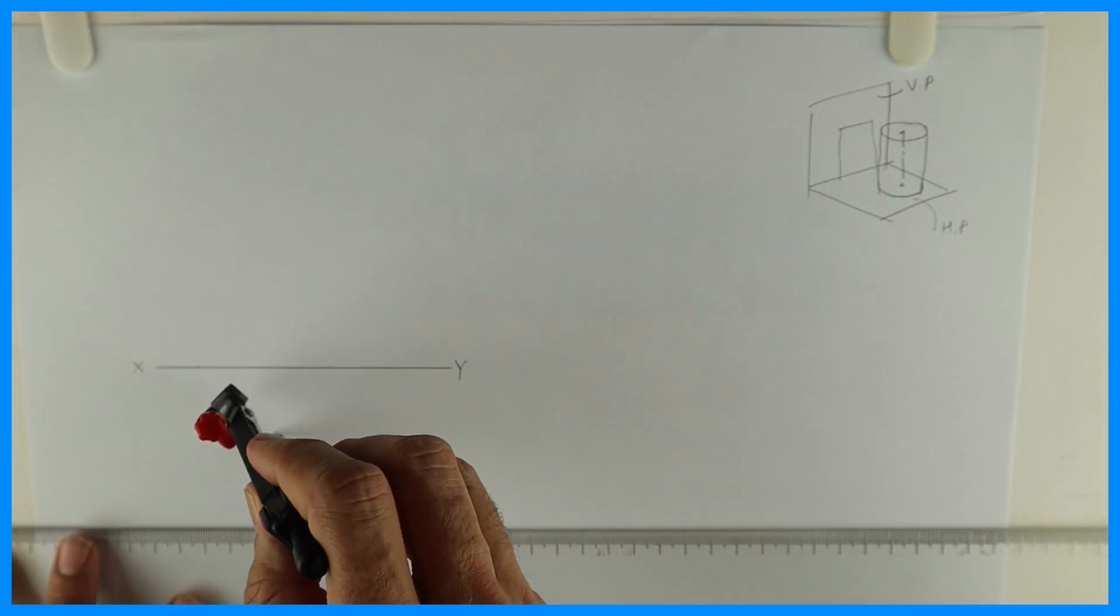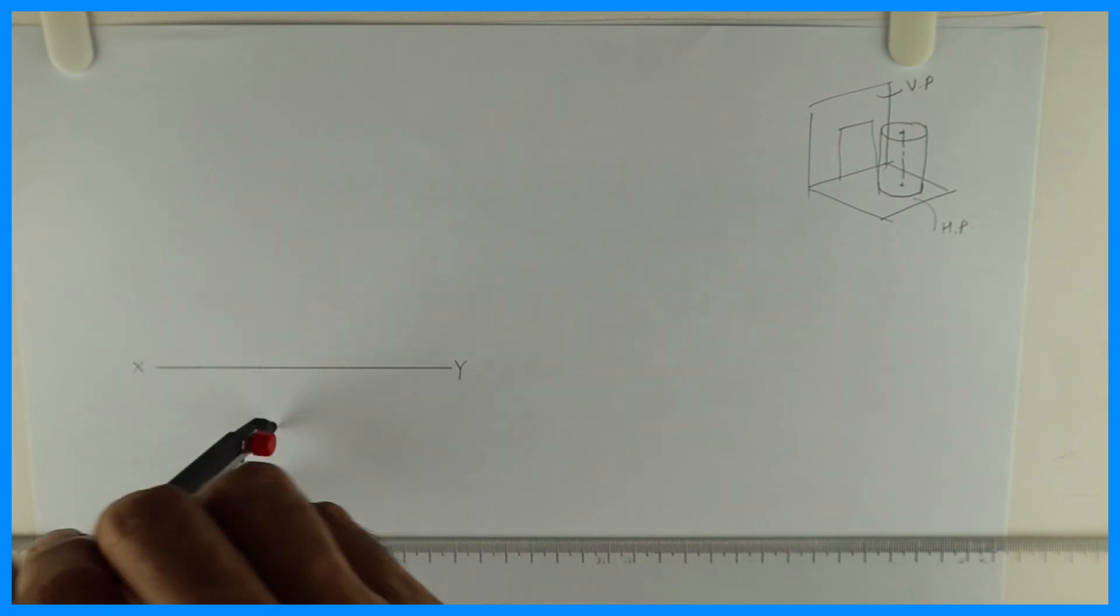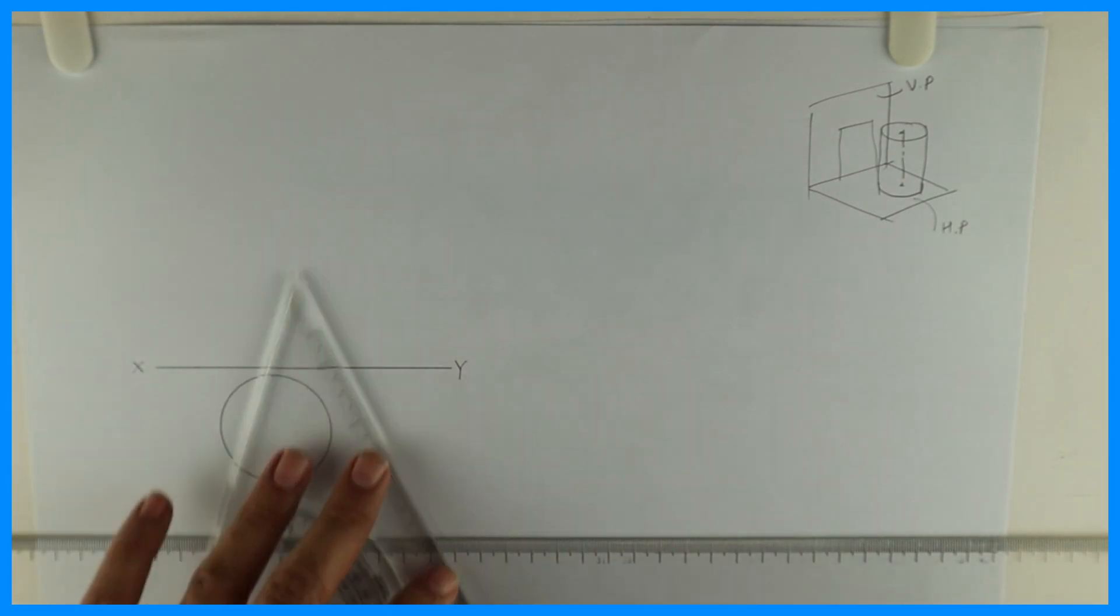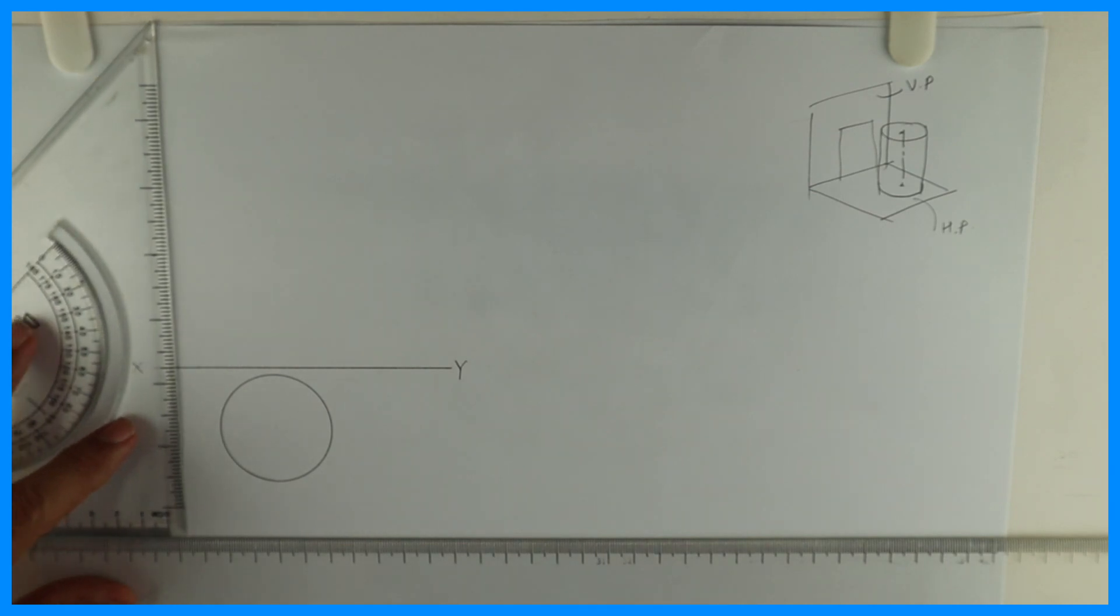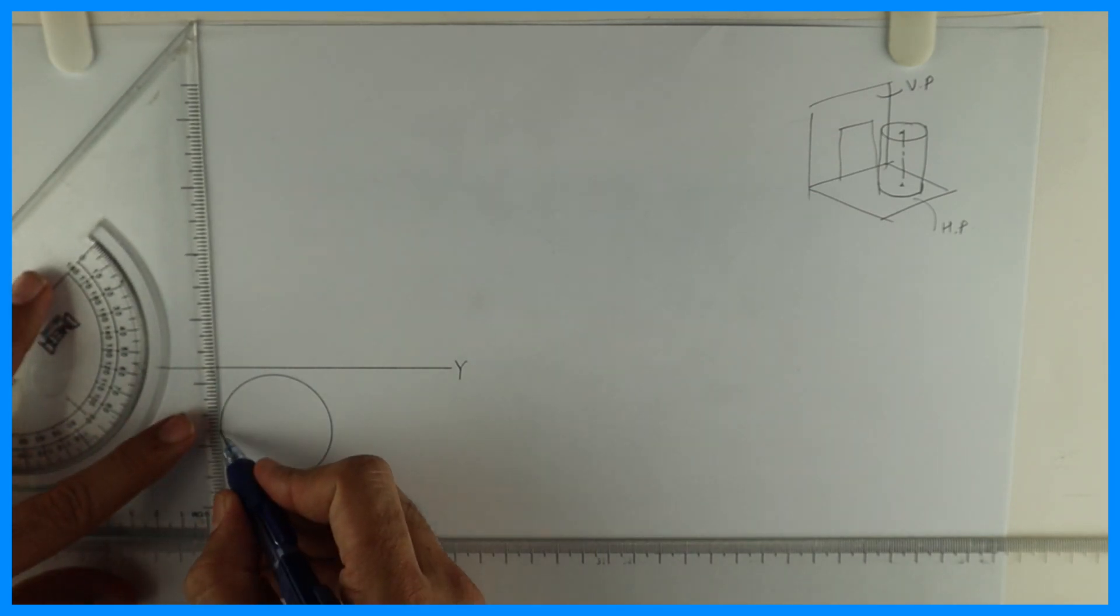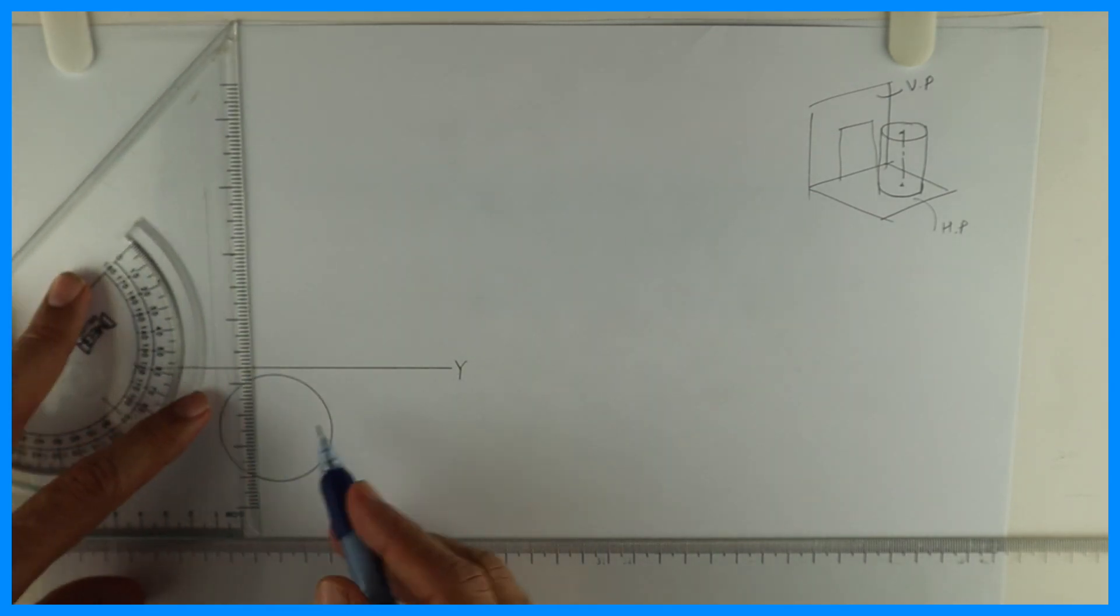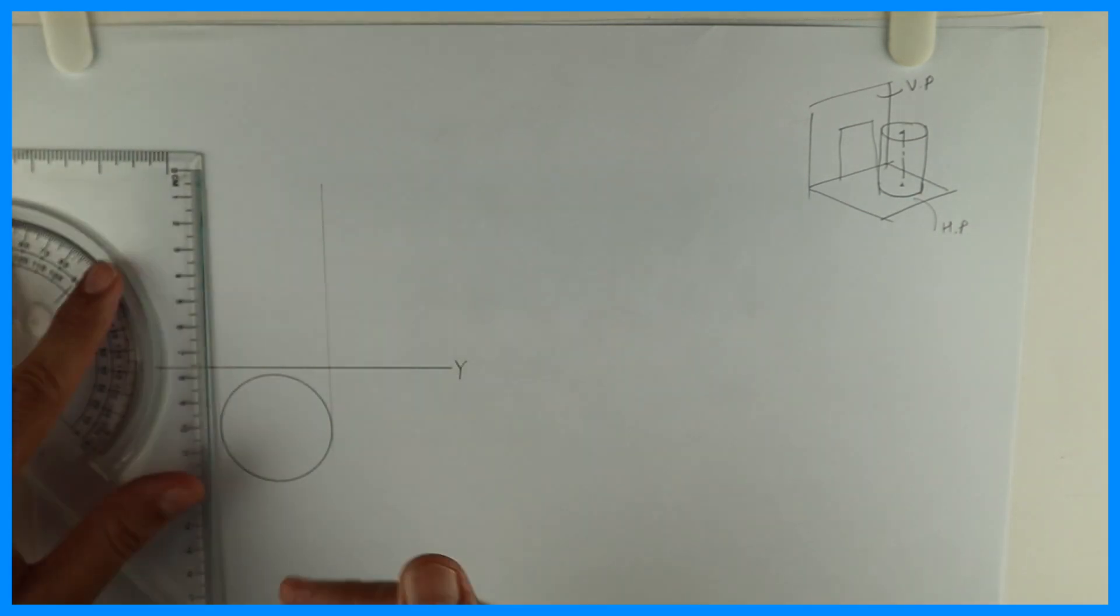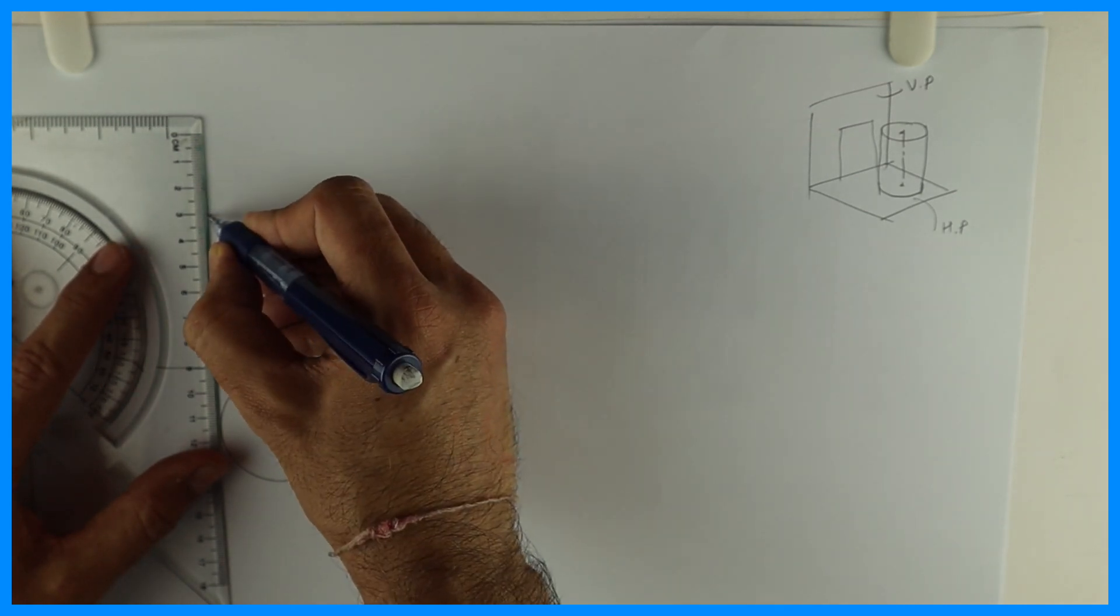So I'll take radius 21 and I'll draw top view. After that I have to draw front view. So when you see in front what do you see? You see rectangle. So I will draw rectangle in front view. Height is how much? Height is 60.